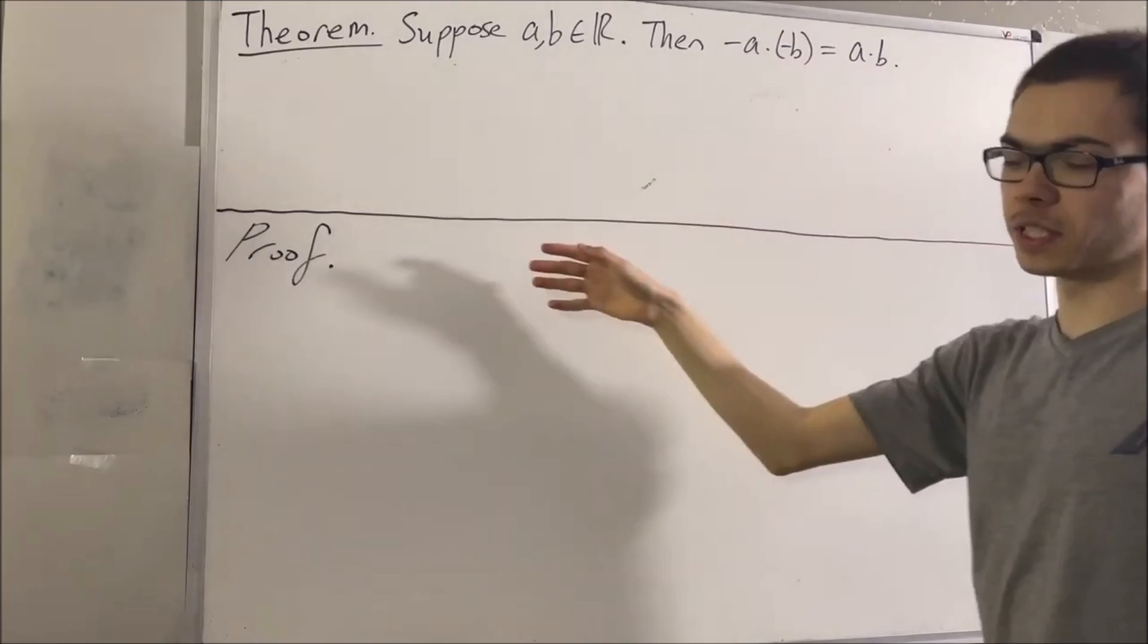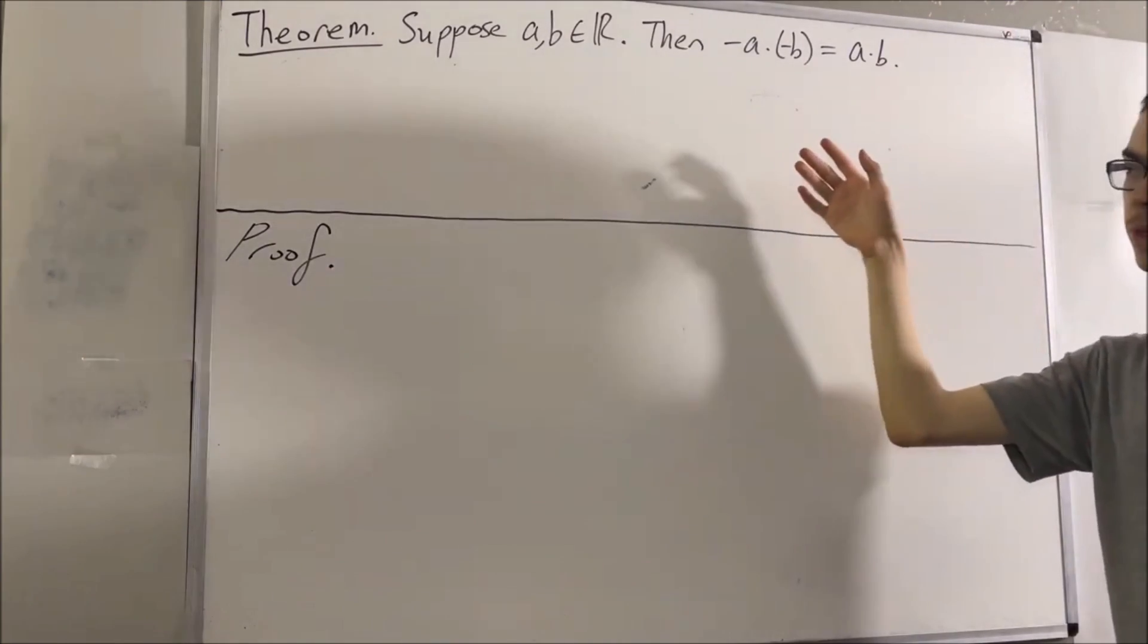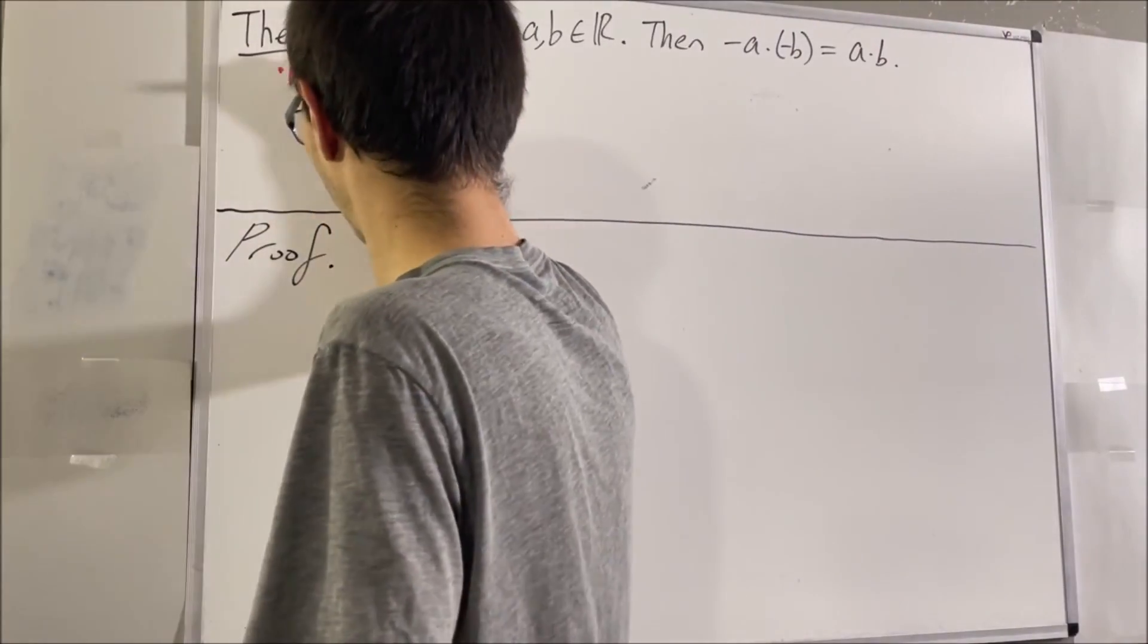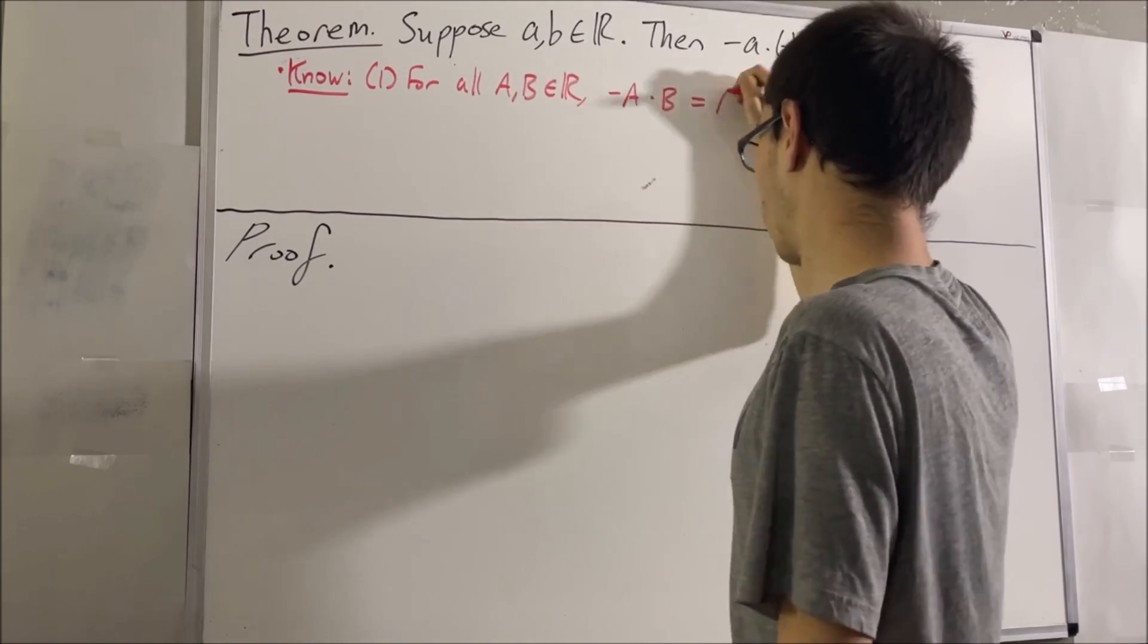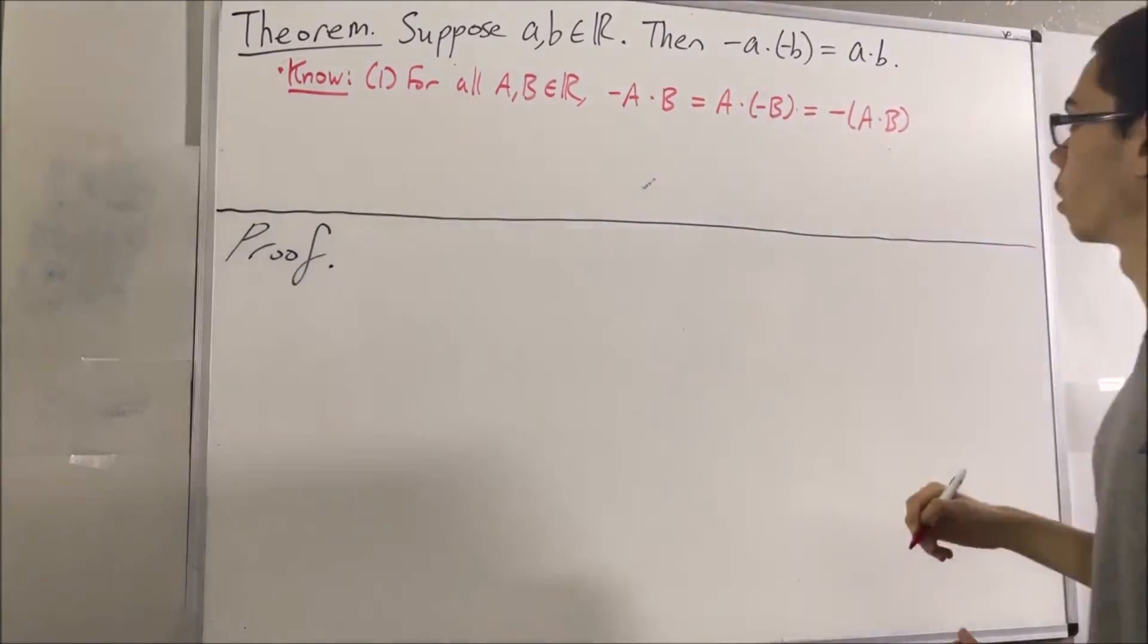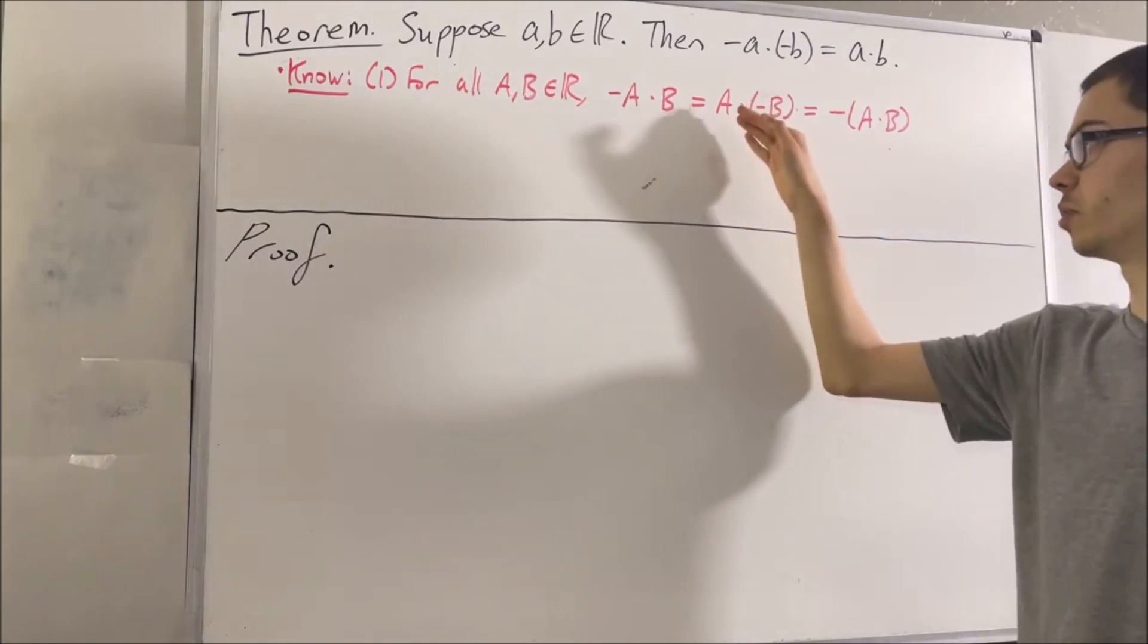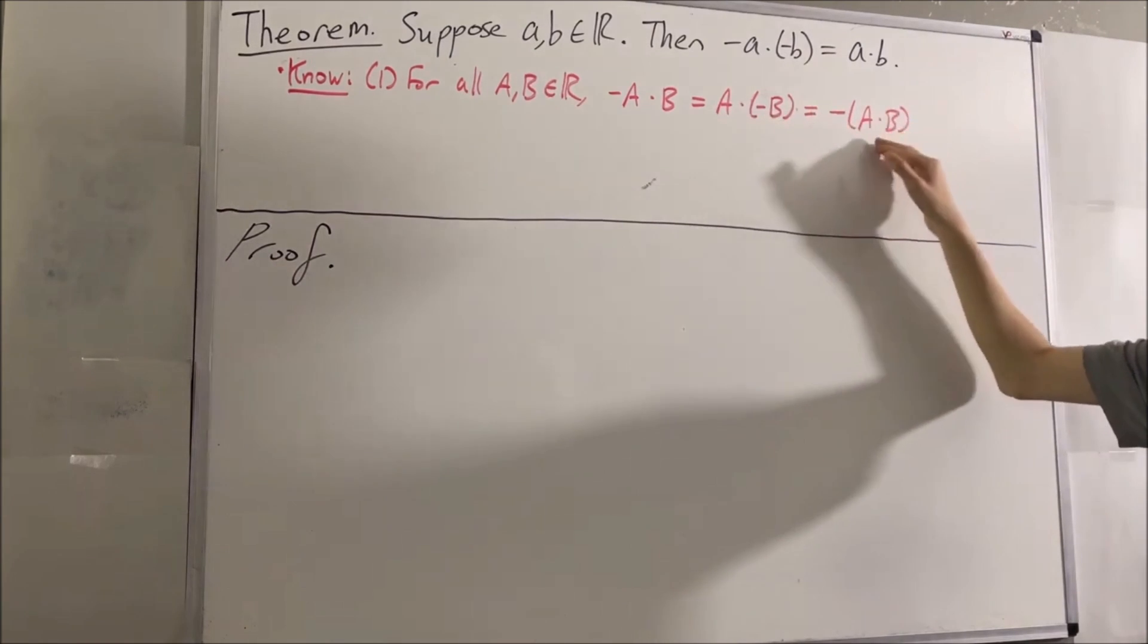Now in proving this theorem, we are going to rely on some facts which come from the field properties of the real numbers. The first is as follows: For all real numbers A and B, the negative of A times B is equal to A times the negative of B, which is equal to the negative of A times B.